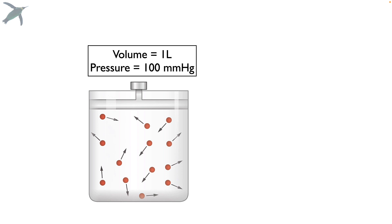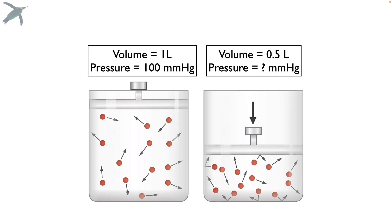If you have a one-liter container and the pressure of those air molecules is 100 millimeters of mercury, what would happen if you reduced the volume by half? The pressure has to be higher, because you have less space for those air molecules to move around in, so they're going to bounce against the walls of the container more frequently.